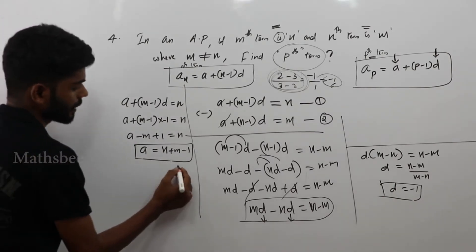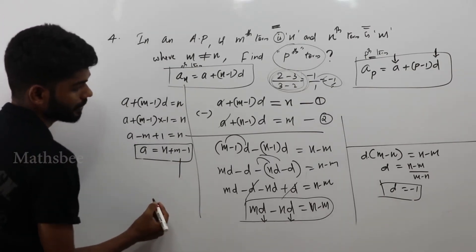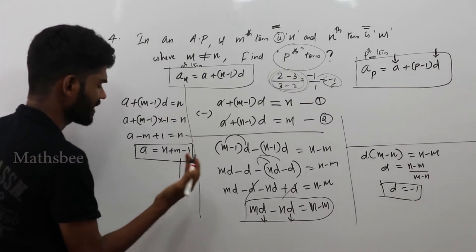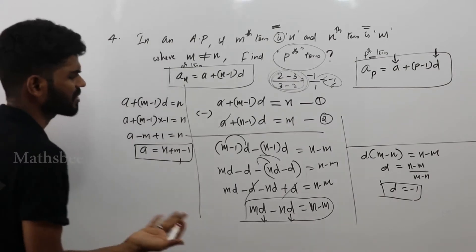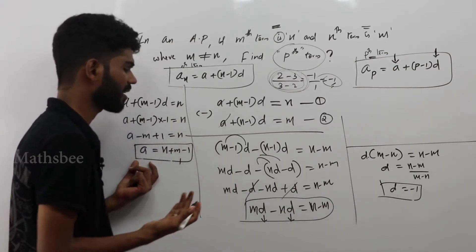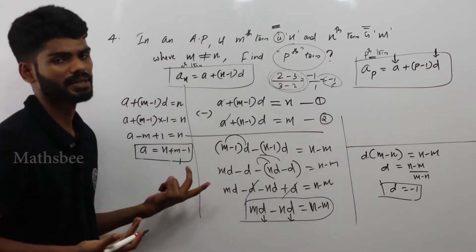We get the result. A equals N plus M minus 1. Now, we have both A and D. We will substitute A into the Pth term formula.